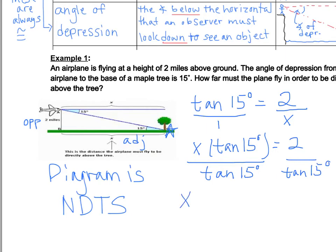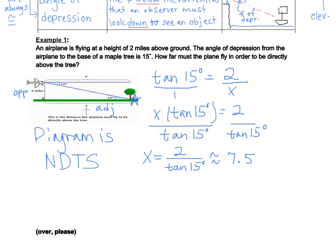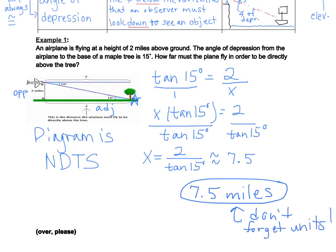So if I have x alone, x is going to be equal to 2 over the tangent of 15 degrees. And if we use our calculator and our tangent function there, we can get an approximation of 7.5. And I just want to remind you that because we are dealing with an application problem, whenever you get to the end of an application problem, you want to make sure that we're going to change this to 7.5, and then make sure we attach units there. So 7.5 miles is our final answer. And don't forget your units.